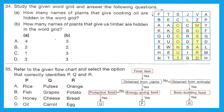Question 34: Study the given word grid and answer the following questions. How many names of plants that give cooking oil are hidden? We found two — coconut and mustard. How many names of plants that give timber are hidden? We found teak and sal — two such plants. The right answer is option B.